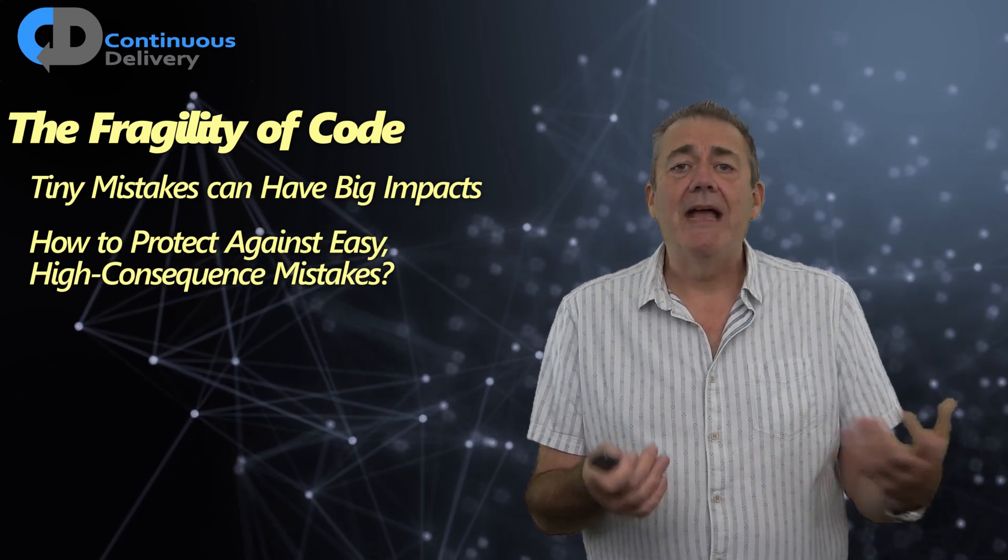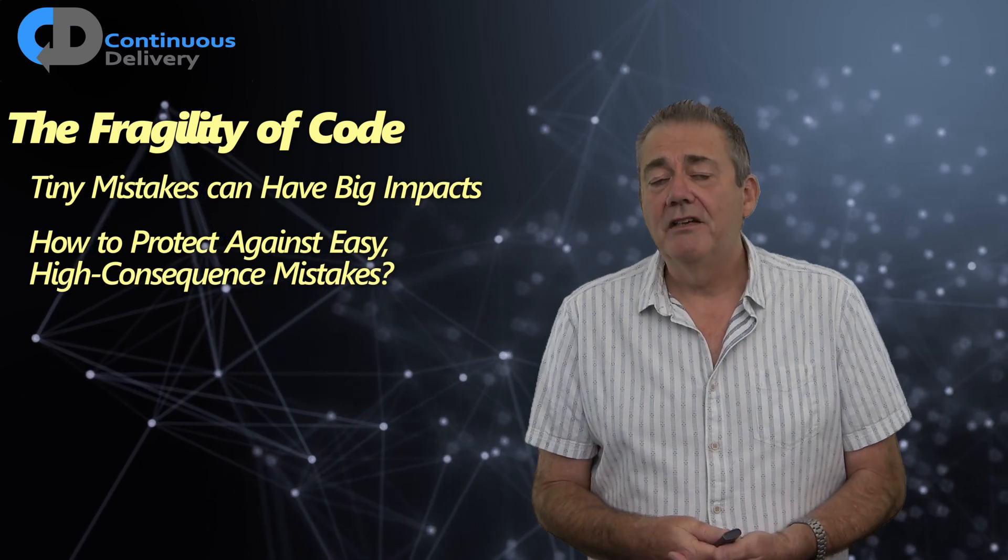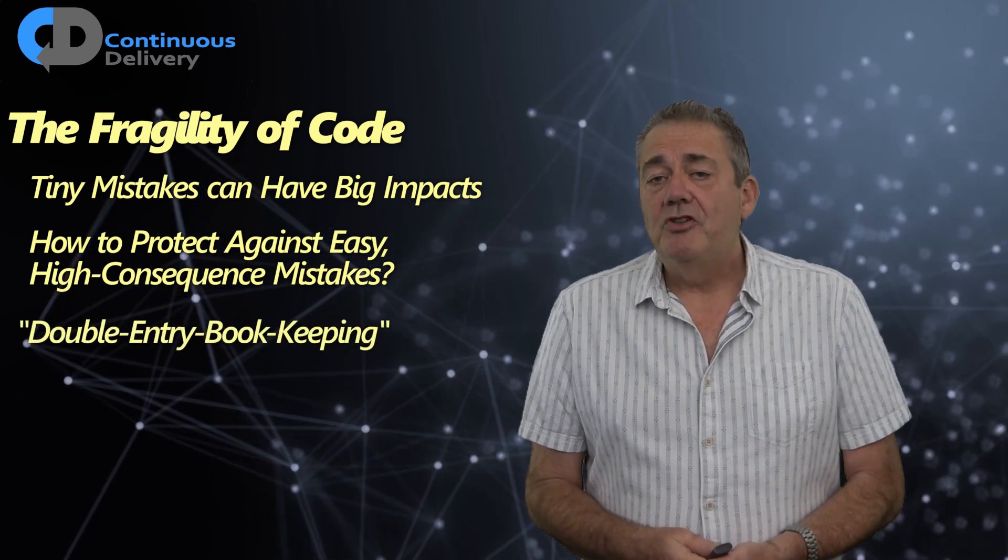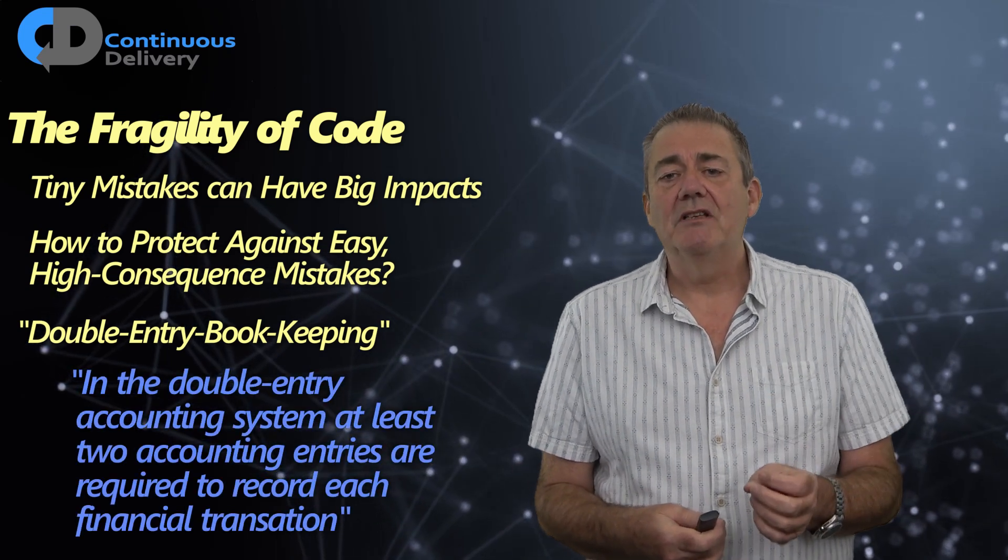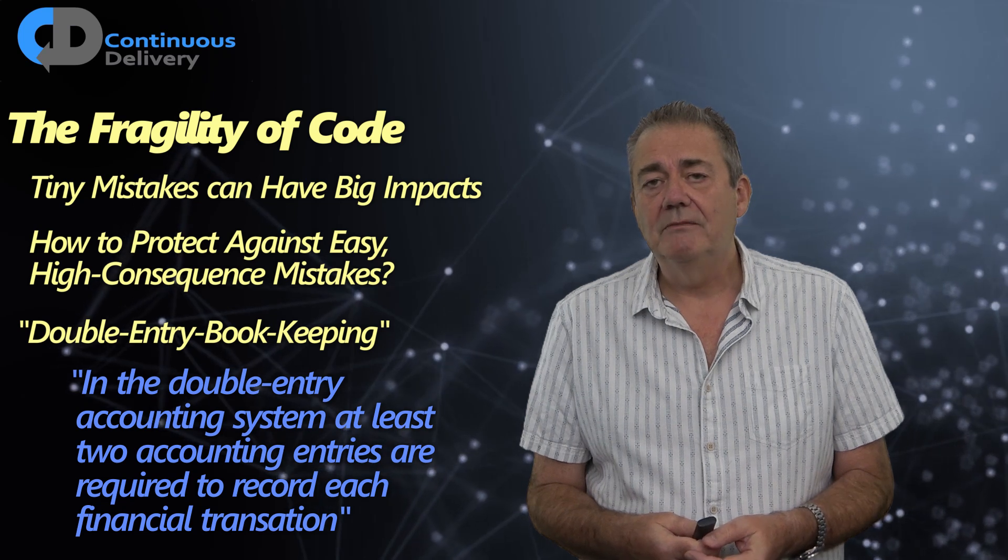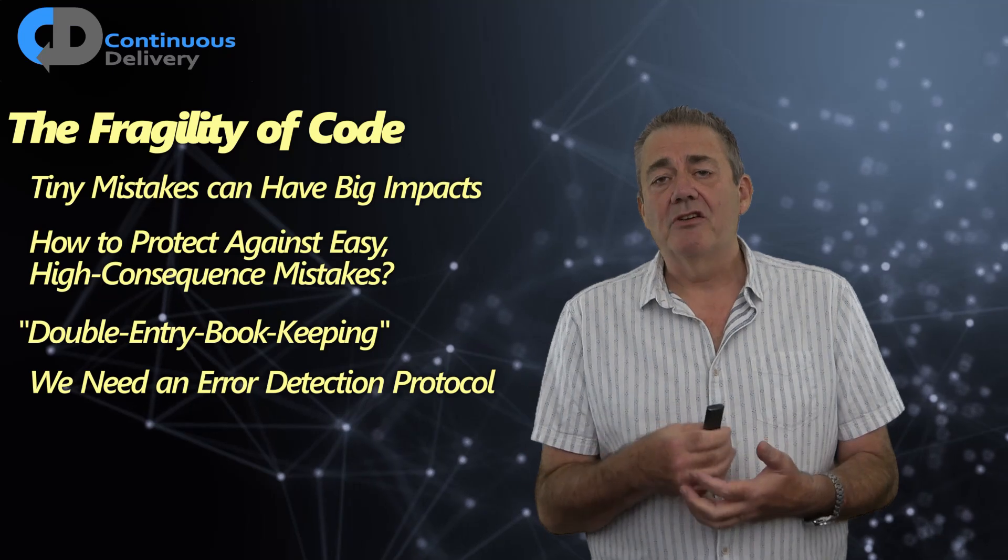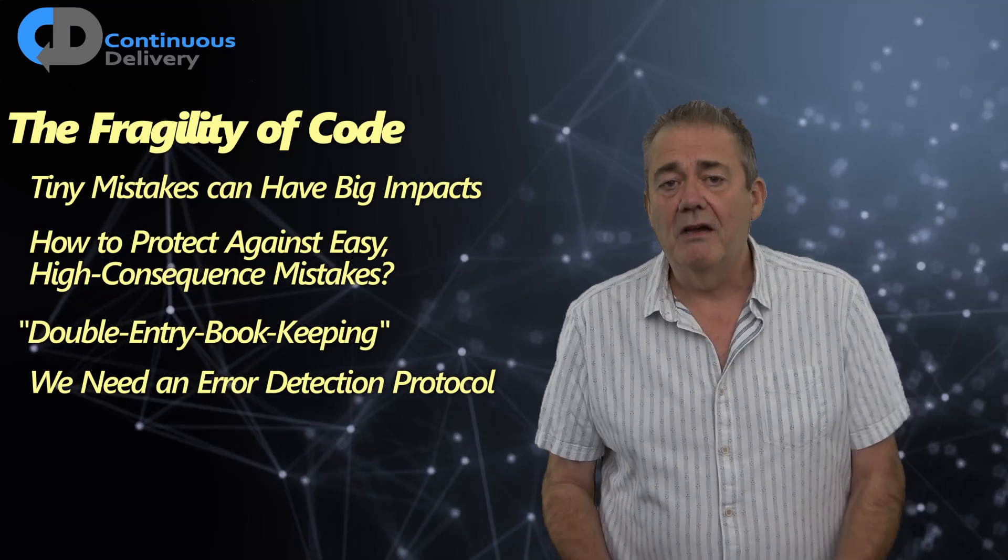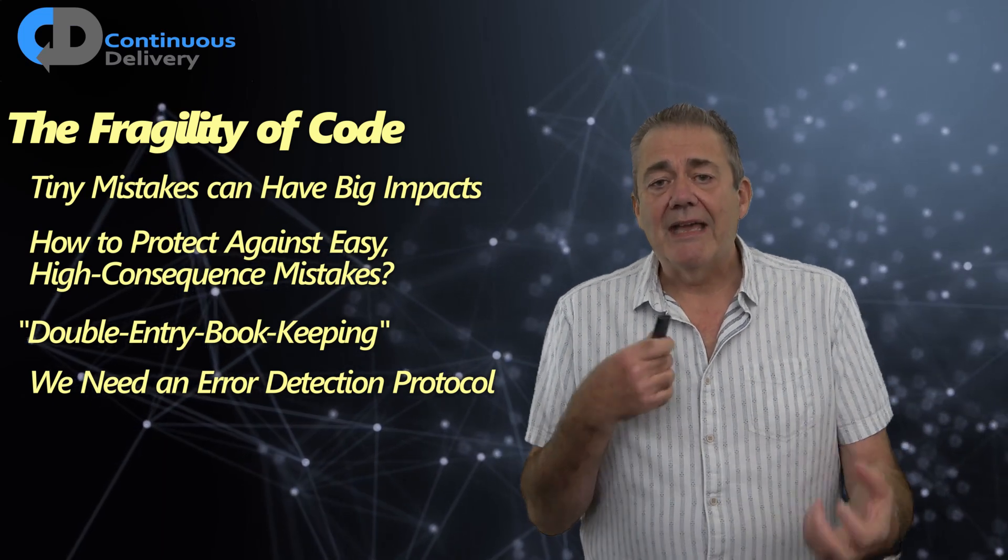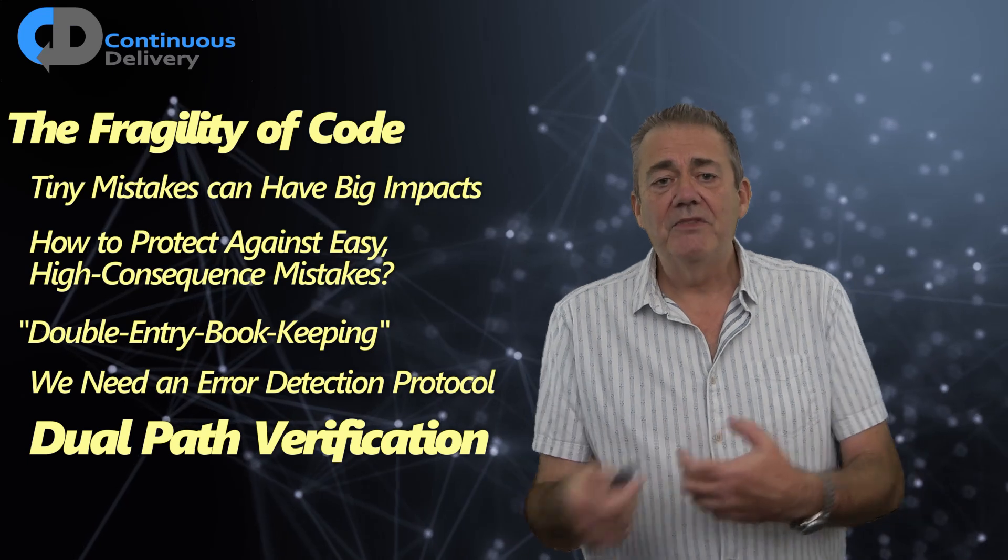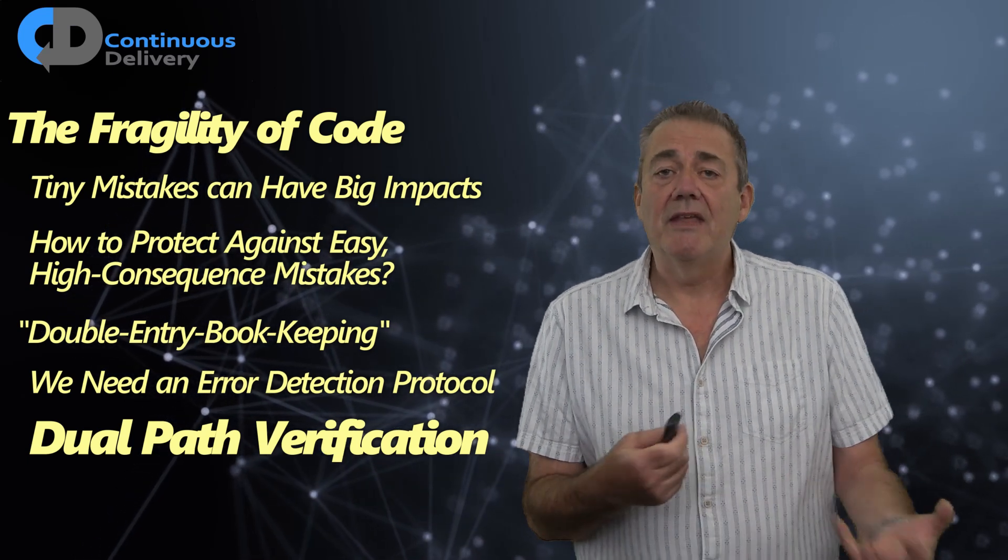Accountants found a solution to this problem. Depending on what sources you look at, it dates back to either the Romans or Genoa in 1340. They invented double entry bookkeeping. In double entry accounting system, at least two accounting entries are required to record each financial transaction. That's the description of double entry bookkeeping. This is an error detection protocol invented all of those hundreds of years ago to help accountants spot when they made mistakes. What they do is that accountants record each transaction twice from different perspectives, and if the results don't match, then there's a mistake somewhere, and they go in search of the mistake.